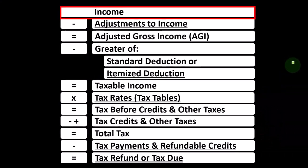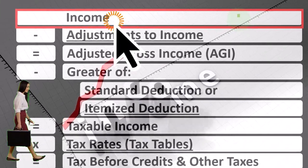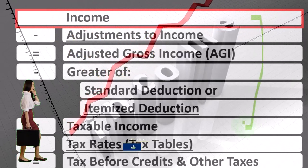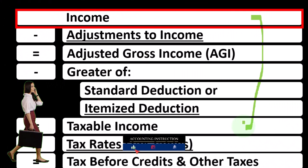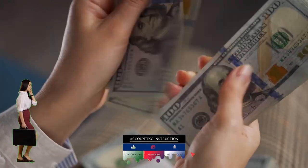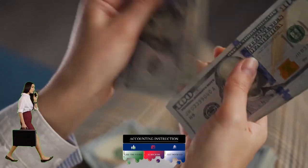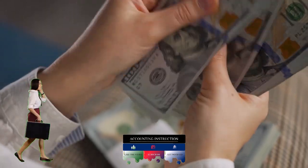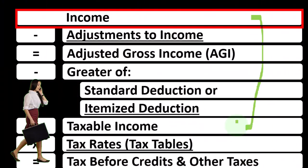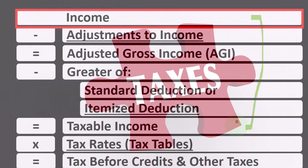When looking at our income tax formula, we're focused once again on line one, that being income, remembering that the first half of the income tax formula is in essence an income statement — although a strange one — where we have income minus the equivalent of expenses being deductions, equals the equivalent of net income, this being taxable income. Our objective is the opposite of a normal income statement: to get as low a taxable income as possible.